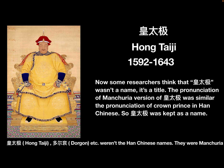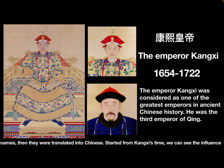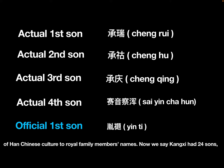Names like Huang Taiji, Dorgun, etc. were not Han Chinese style names — they were Manchuria names, then translated into Chinese. Starting from Kangxi's time, we can see the influence of Han Chinese culture on royal family members' names.